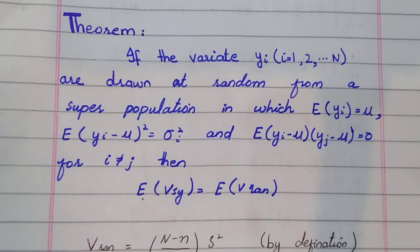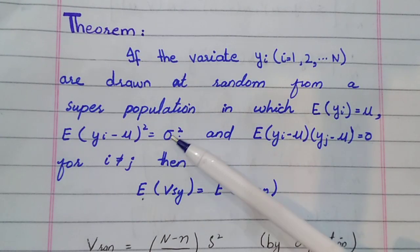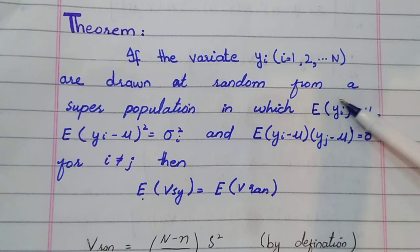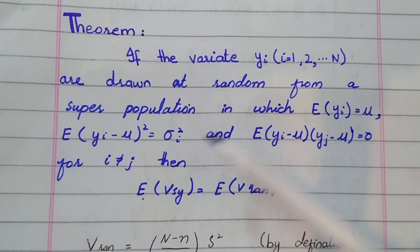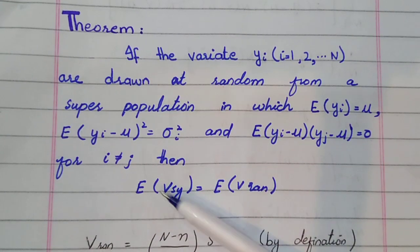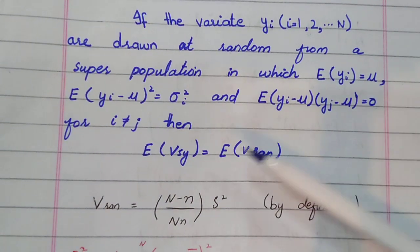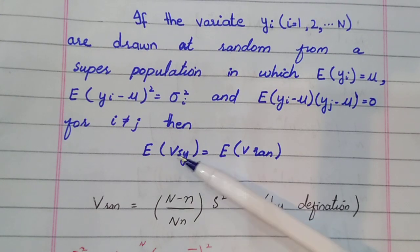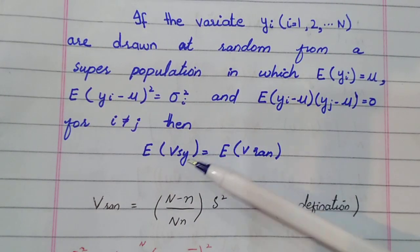This is the last proof of systematic sampling. If the variate yi is equal to y, drawn at random from a superpopulation in which the expected value of yi equals mu, variance equals sigma square, and correlation equals zero for i not equal to j, then we have to prove this under these assumptions. First we take the variance of systematic expectation and the variance of random, and prove them equal.